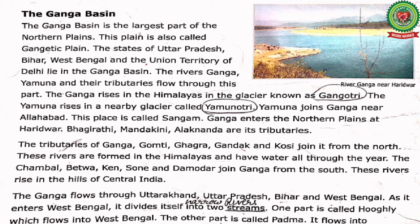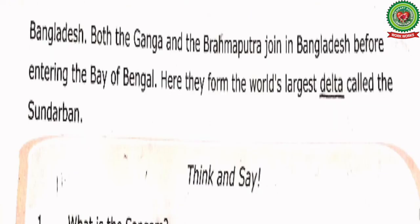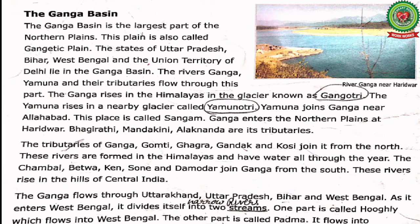The Ganga flows through Uttarakhand, Uttar Pradesh, Bihar, and West Bengal. As it enters West Bengal, it divides itself into two streams: one part is called Hugli, which flows into West Bengal, and the other part is called Padma, which flows into Bangladesh. Both the Ganga and the Brahmaputra join in Bangladesh before entering the Bay of Bengal.